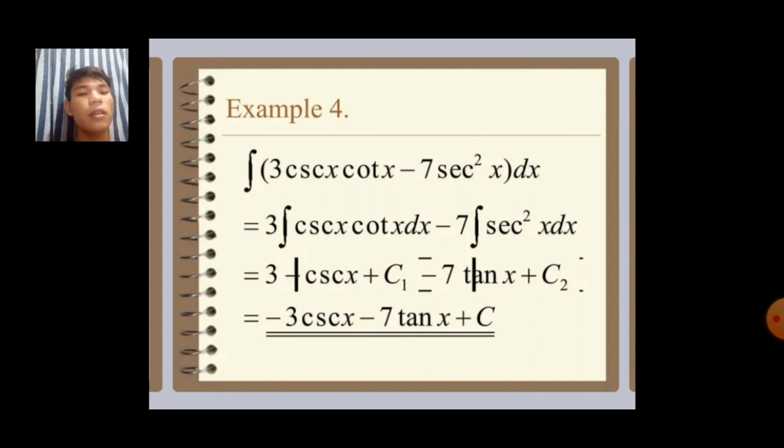Then 3 times negative csc x plus c1 minus 7 tan x plus c2. Then our final answer will be negative 3 csc x minus 7 tan x plus c.